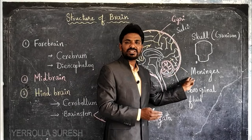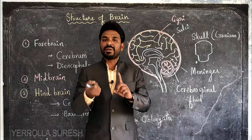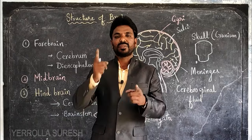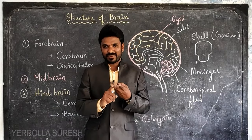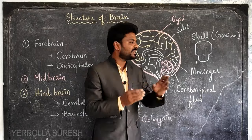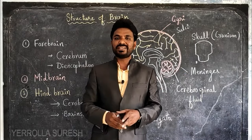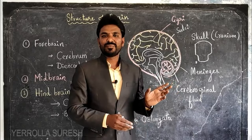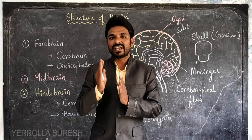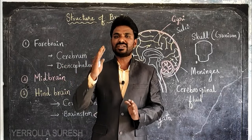The three layers of meninges are: the outermost layer is the dura mater, the middle layer is the arachnoid membrane, and the inner layer is the pia mater. These three membranes together are called meninges. Inside the meninges there is cerebrospinal fluid, whose function is giving protection to the brain from external pressures, shocks, and injuries.